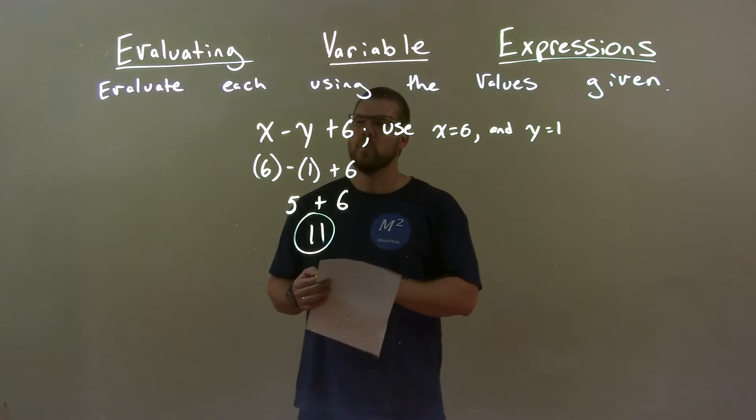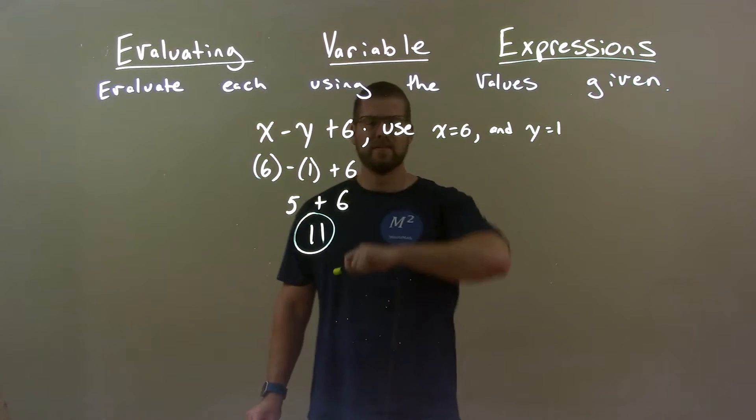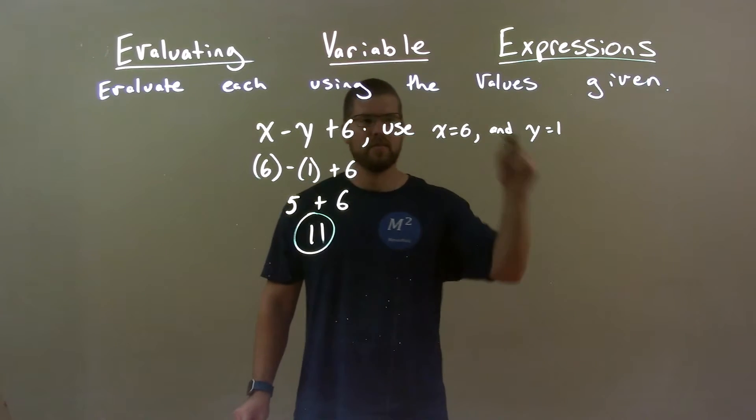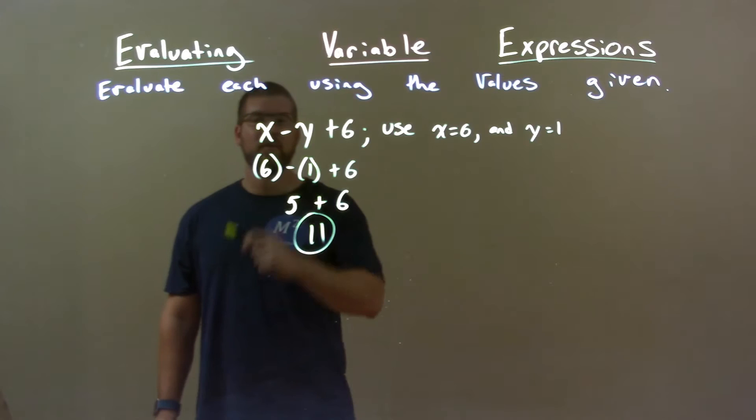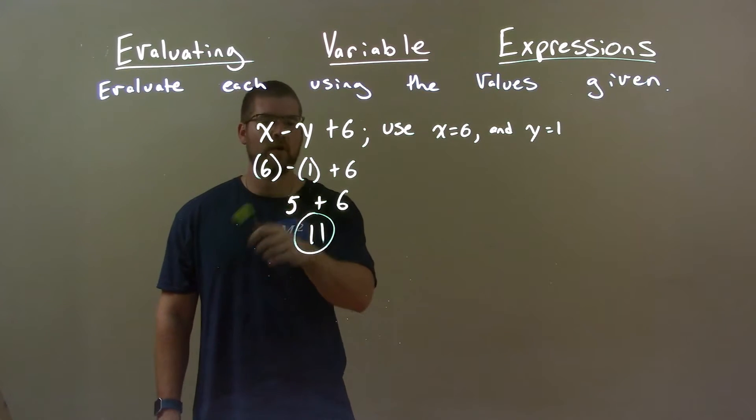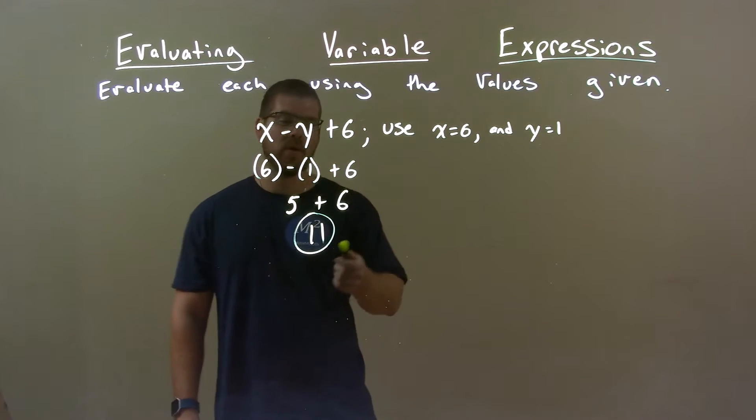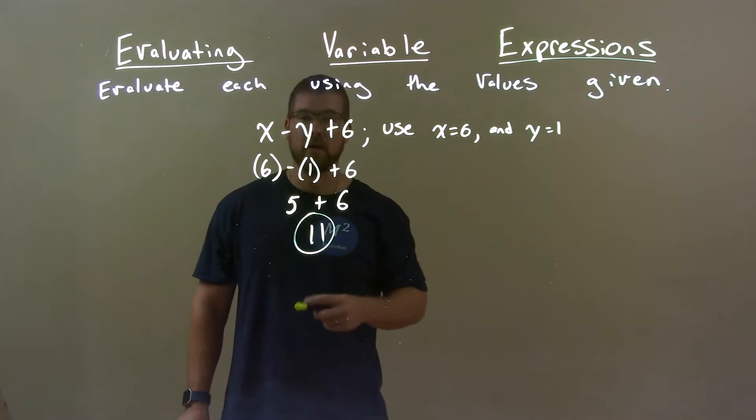Quick recap. We're given x minus y plus 6 and we're using x equals 6 and y equals 1. Substitution: 6 for x, 1 for y. Then we simplify. 6 minus 1 is 5, plus 6 at the end is 11. So again, final answer is just 11.